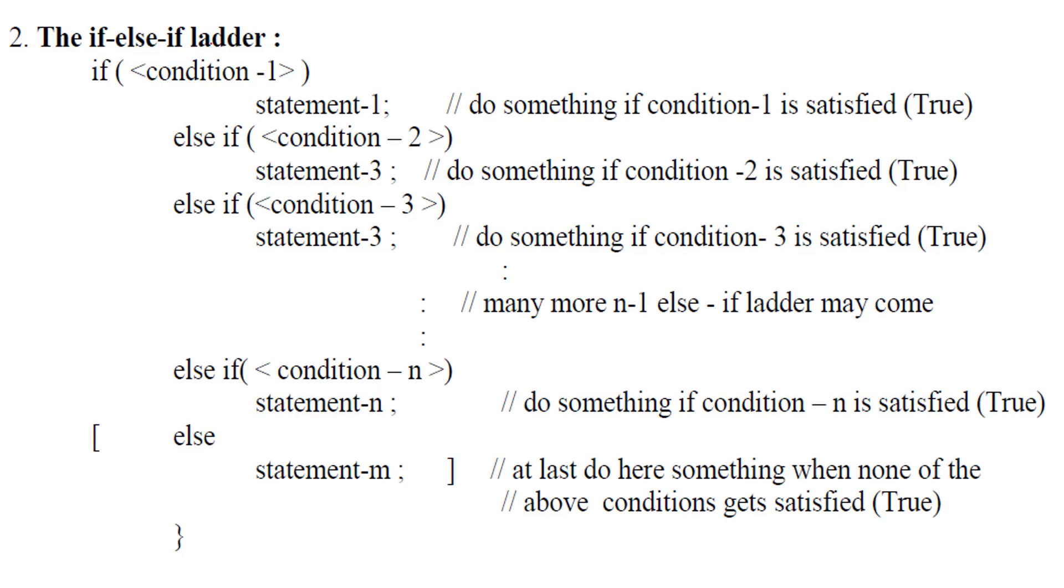Then we have if-else-if ladder. That means if certain condition is met it is okay. If it doesn't meet then you want to check for another condition. And if these two conditions don't meet you want to check for certain other condition. For that you use if-else-if ladder, you just write else if.